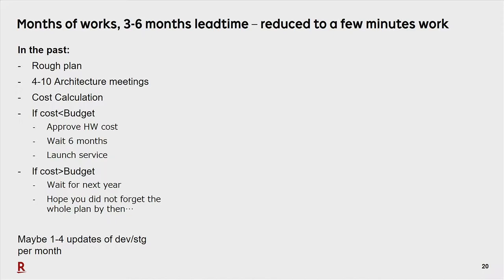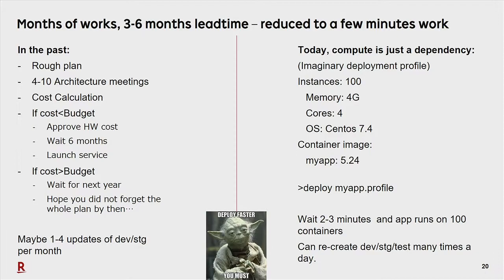The effect of this is huge. While 10 years ago it was totally standard to have a three-to-six-month lead time to deploy something new, you can today literally make a small deployment profile — for example: 'I want 100 container instances, each with four gigabytes of memory, four cores, CentOS 7.4, running Maya 5.24.' A few minutes later, you have that deployed if you have the hardware available. You just shaved off six months of waiting time from your project. This is the norm for modern software development.